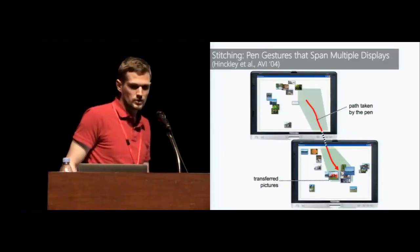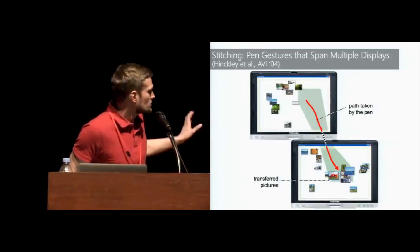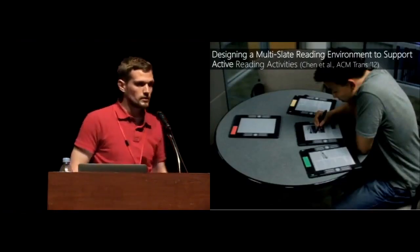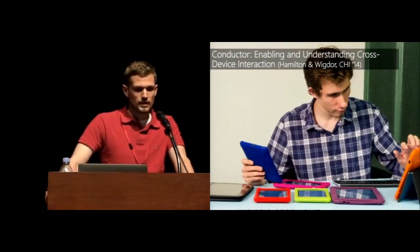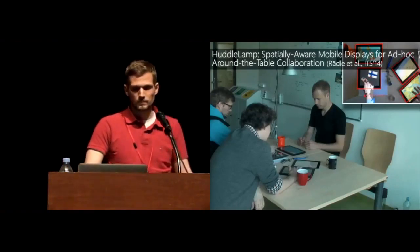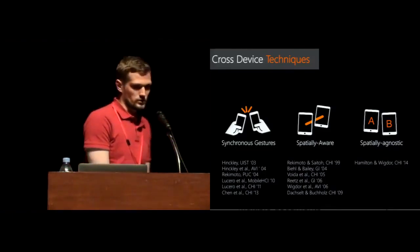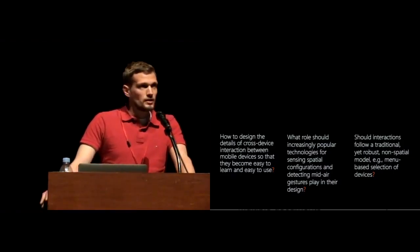Applications of cross-device interaction have become increasingly popular and diverse, ranging from user interfaces that span across multiple displays, to applications for sharing photos between a small group using their own mobile phones. There have been systems designed for multi-slate systems that support active reading and cross-device interactions through conduit gestures, where the user acts as a conduit to transfer objects from source to target device. Last year at CHI, there was a sense-making system using spatially agnostic, non-spatial menus to select target devices.